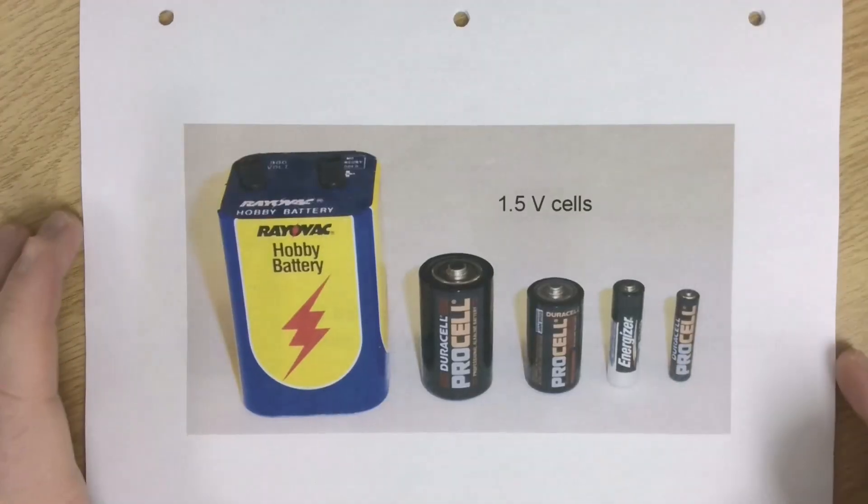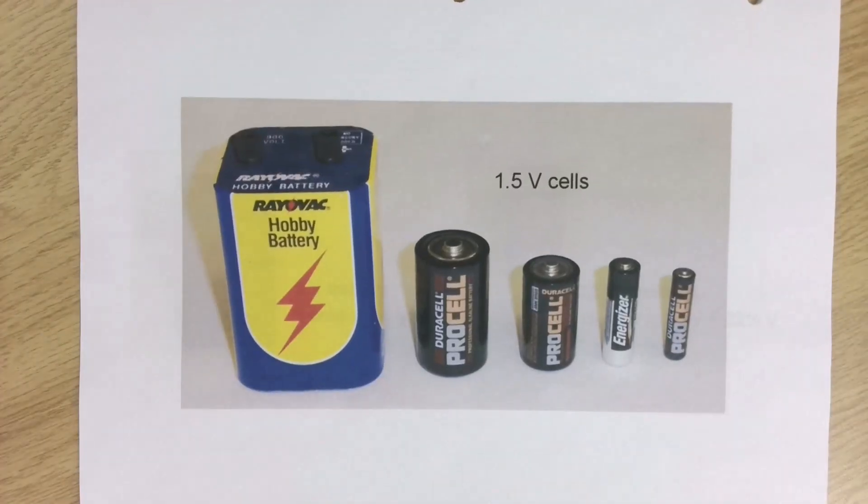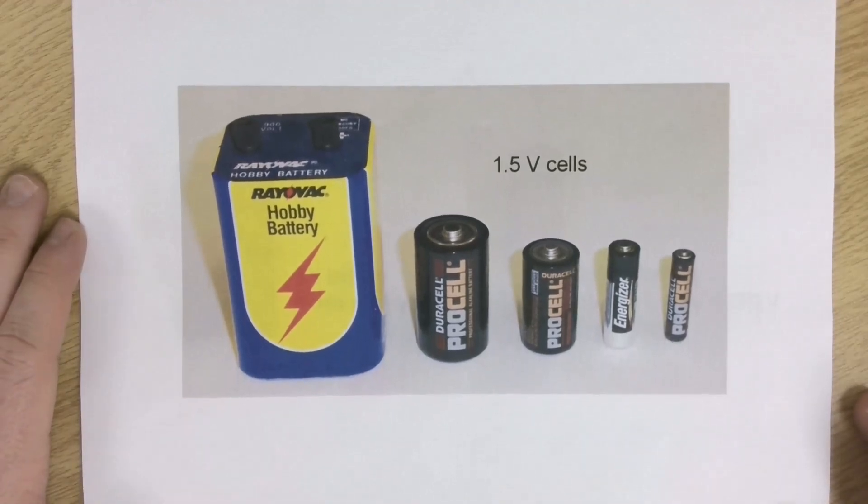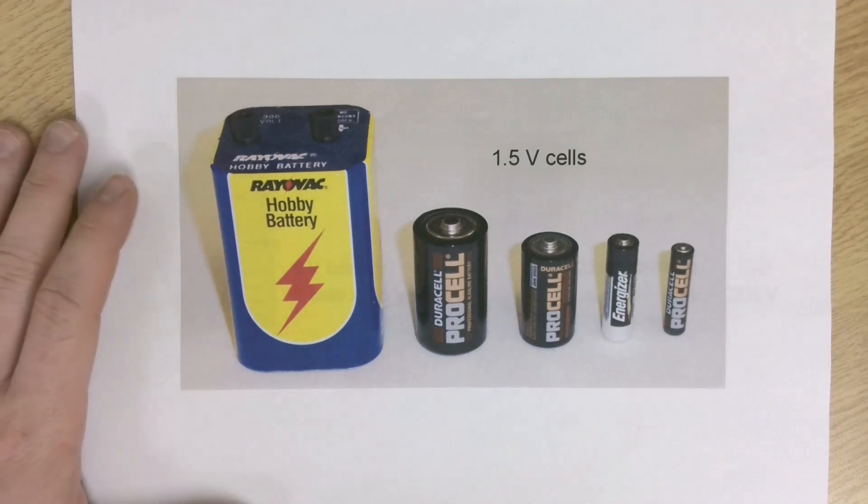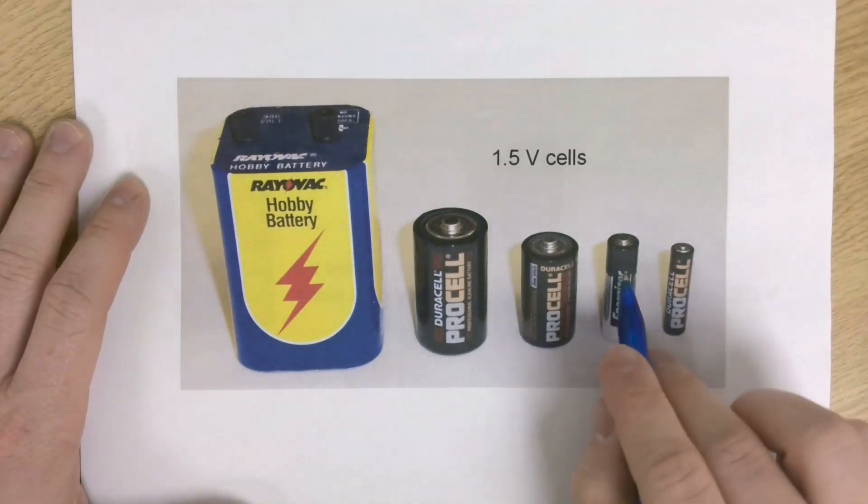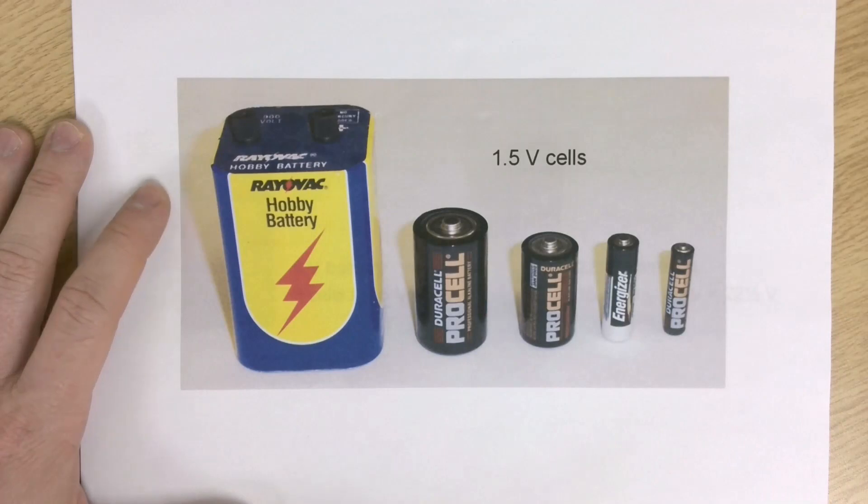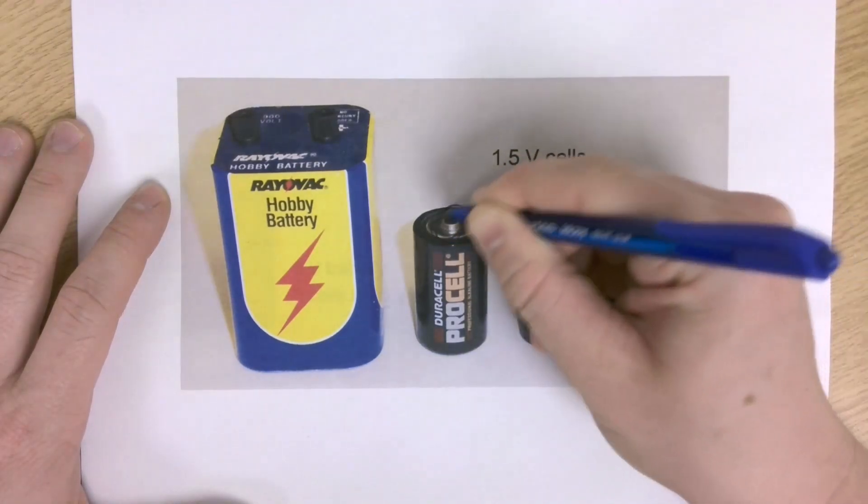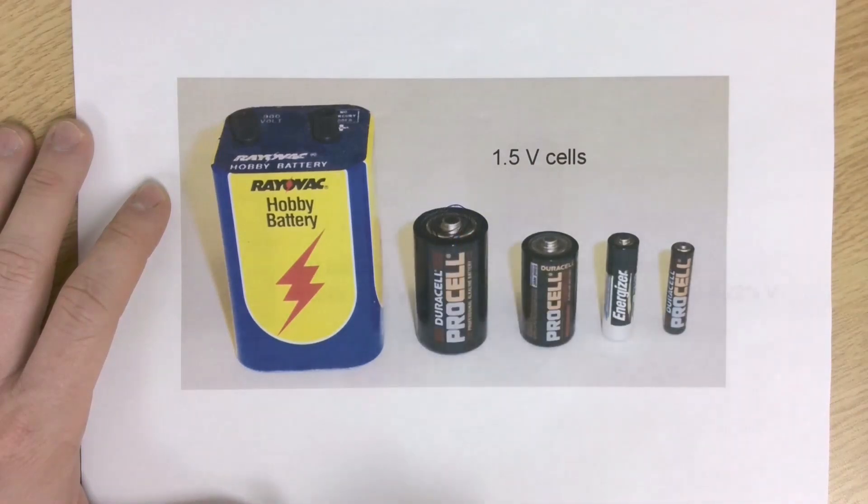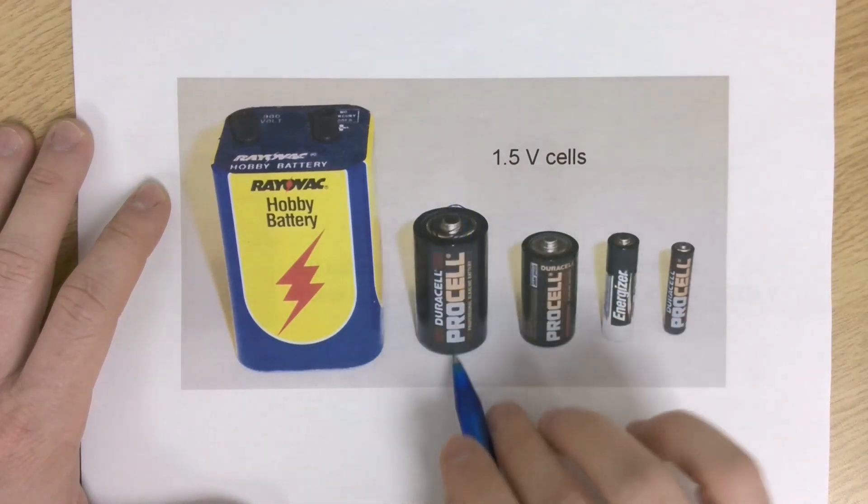In general, the larger the battery, the more electrical energy there is. Because the larger the battery, the more chemicals we have reacting to each other, creating that difference in charge. So these are 1.5 volt cells or batteries. For these four, it's going to be about 1.5 volts. This guy up here looks like it's saying 900 volts.